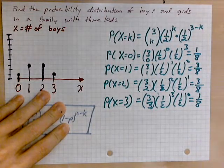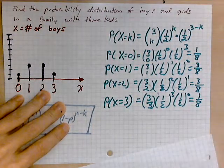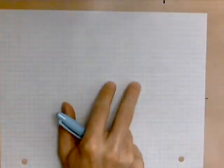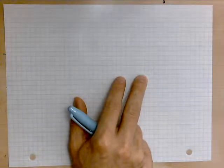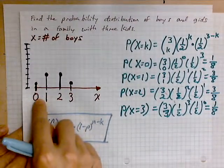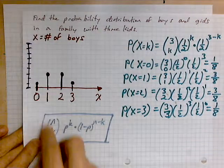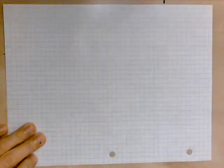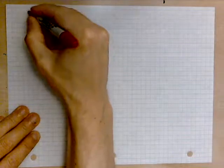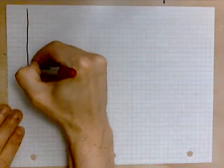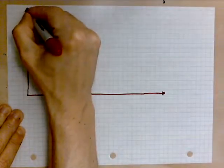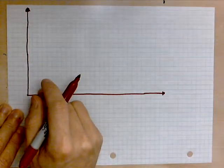Let's take a look at what we have. The CDF in this case will be a step function. To the left of zero there is no probability — you cannot have minus one boy — which means between negative infinity and zero there is no accumulated probability. Let's draw the CDF: draw a Y-axis and an X-axis as always. I will mark everything on the Y-axis in terms of eighths.